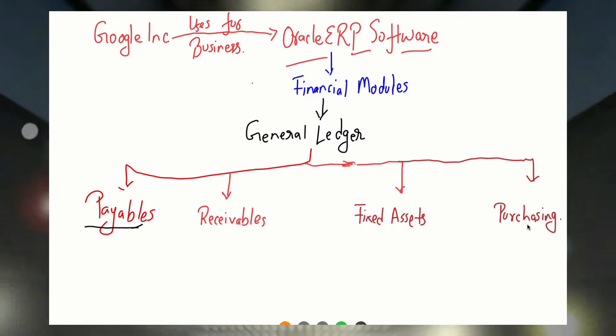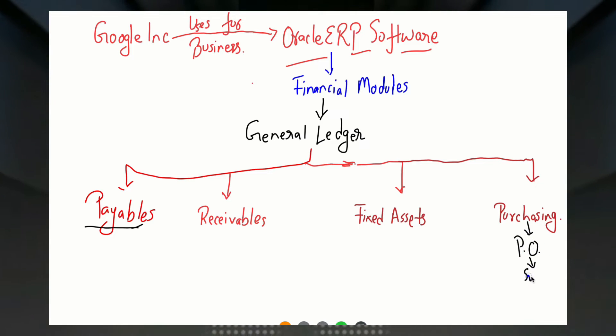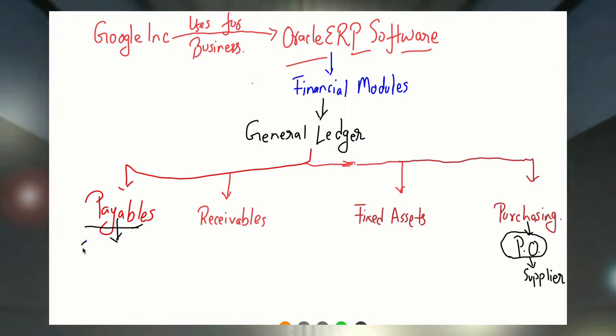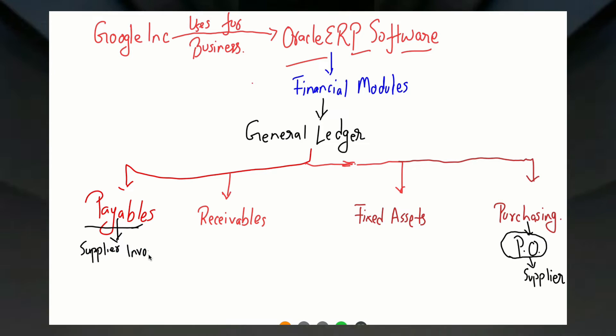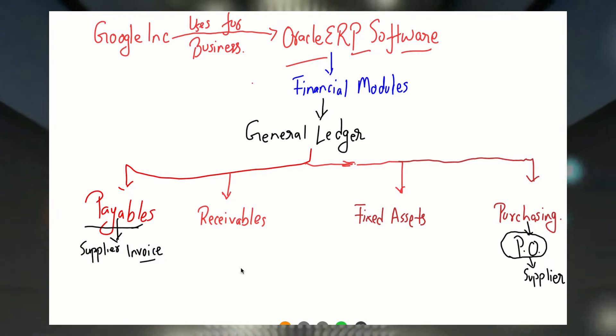So if Google Inc wants to purchase anything, they will use the purchasing module to raise a purchase order. They will send this purchase order to the supplier, and then the supplier will send them the goods, which they will receive. After that, in the payables module, they will create an invoice. So in the purchasing module we are creating a purchase order, and in the payables module we are creating an invoice.